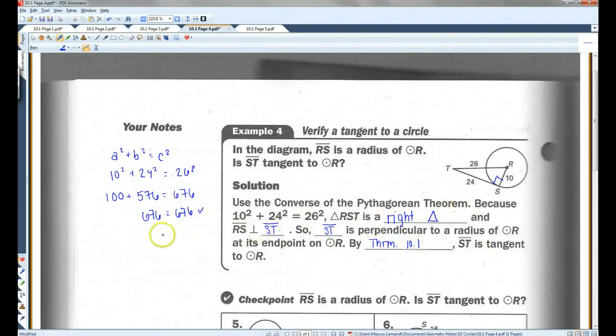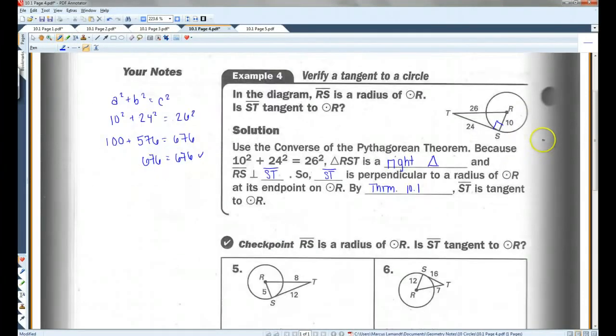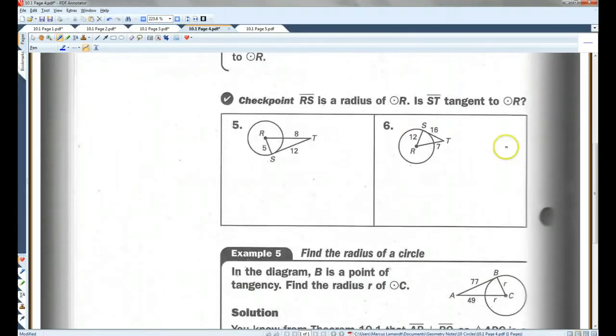Now, if we had ended up with, like, 675 equals 676, something that's not true, then we would know that this is not a tangent line. But because it does create a right triangle, which means this does make a right angle, we know that this is a tangent line. Let you guys do the checkpoint.